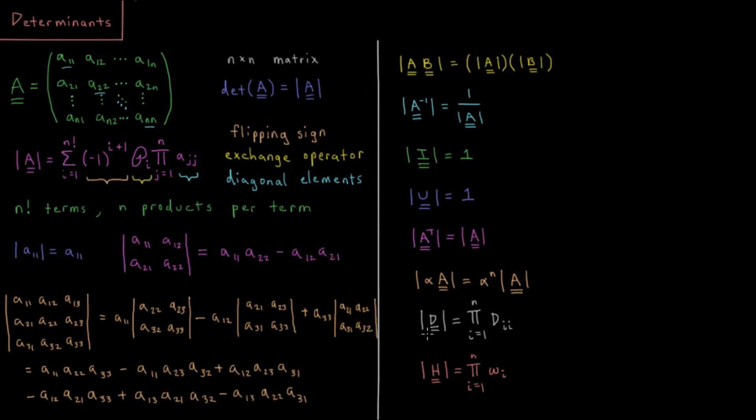If we have some diagonal matrix, a matrix that only has non-zero values along the diagonal, every off-diagonal element is equal to zero, the determinant of that is just going to be the product of the diagonal. Because every other permutation of the columns will have at least one number along the diagonal that will be equal to zero. So the only non-zero term is the original product of all the diagonal elements.